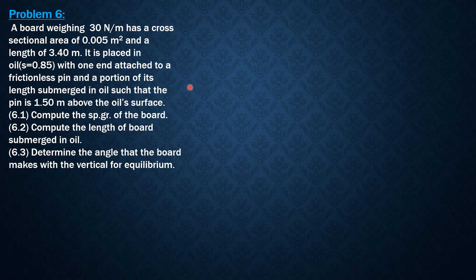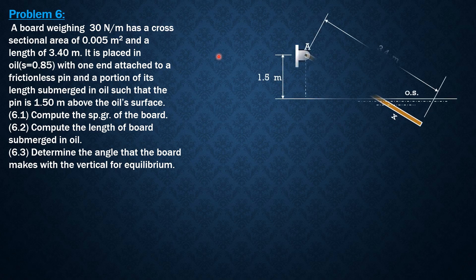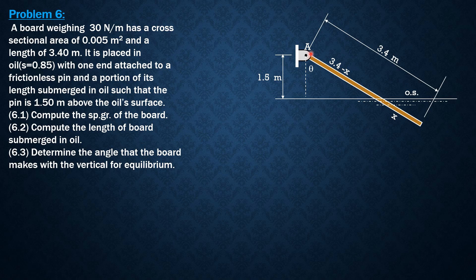To solve this problem, let's have the figure first so that we can analyze this situation. This is the board and one end is attached to a frictionless pin. The other end is partially submerged. The pin is 1.5 meters above the oil's surface and the length of the board is 3.4 meters with a cross-sectional area of 0.005 square meter.